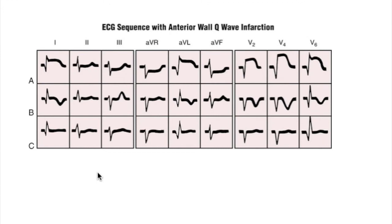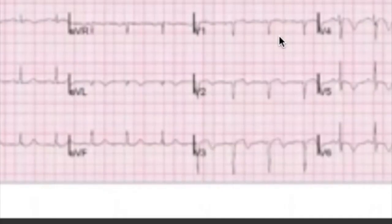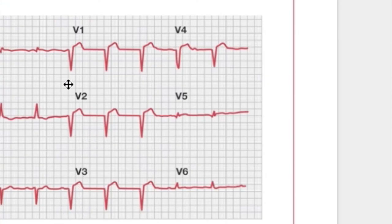To recognize whether a Q wave indicates acute MI or old MI: if a Q wave is present with ST elevation, it is an acute MI; if a Q wave is present with a normal ST segment, it is an old infarction. Q waves are present only in transmural infarction, not non-transmural. Looking at ECG examples — large Q waves in chest leads with ST elevation indicate acute MI, while Q waves with normal ST indicate an old case.